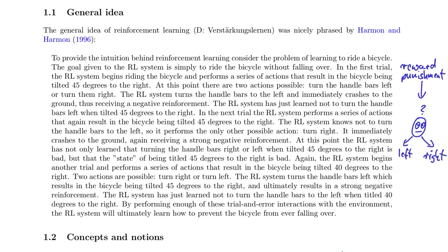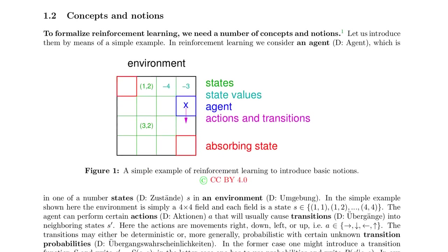Depending on whether the action was good or bad, that's just called reward — it can be positive or negative reward. Now moving to the more formal description, in reinforcement learning we have states, and states are these little boxes. The agent can be in a state — X is the agent and the blue square is the state in which the agent currently is.